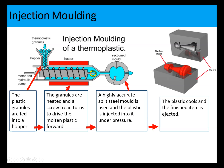Flow diagrams for injection molding are quite popular in the exam. The process: plastic granules are fed into a hopper, the granules are heated and a screw thread turns, pushing the molten plastic forward through a nozzle into a highly accurate split steel mold. The plastic is injected under pressure, cools, then the mold opens and the object is ejected. Those are the four stages of an injection molding flow diagram.